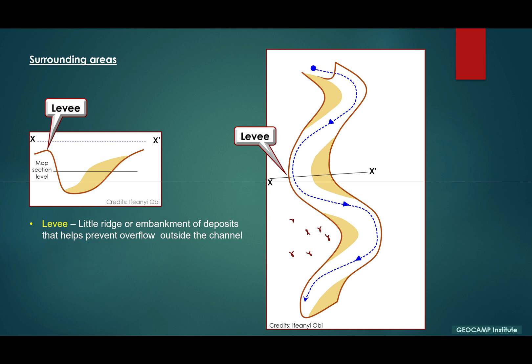So if you look at surrounding areas for meandering systems, we have a levee. A levee is like a little ridge or embankment of deposits that helps prevent overflow of the content of the field, in this case water, outside the channel.